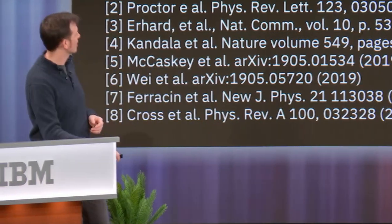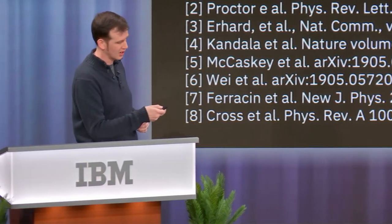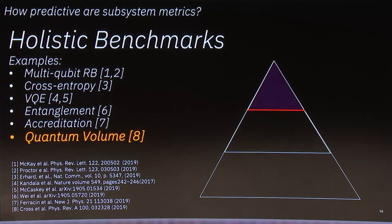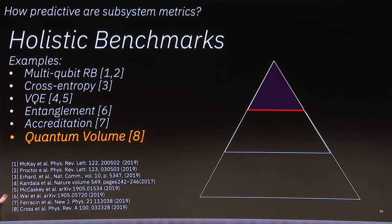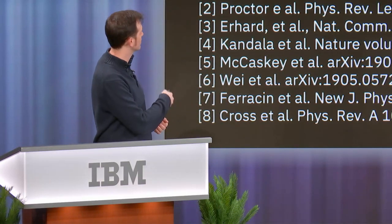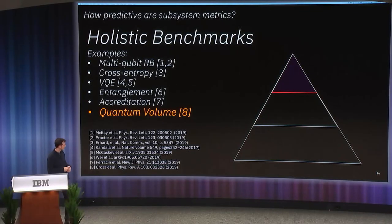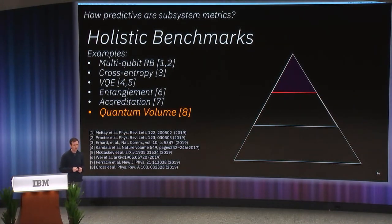There have been a number of holistic benchmarks proposed and demonstrated. For one, we can take randomized benchmarking and instead of doing subset benchmarking, benchmark the whole device. We can look at cross entropy metrics and algorithmic metrics — for example, people have looked at VQE as a metric for the device, where you do VQE on a known Hamiltonian. Entanglement metrics are also popular. But here I'd like to talk about quantum volume, which is our holistic metric developed here at IBM.